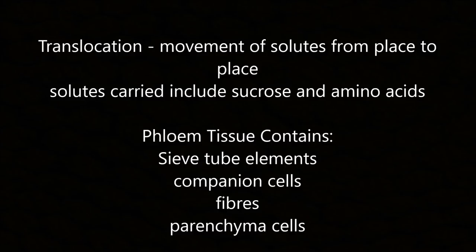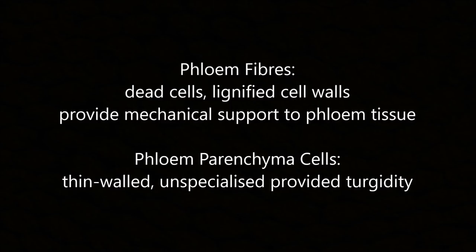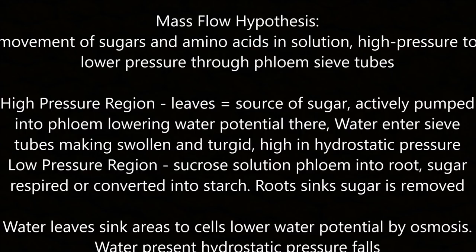Translocation is the movement of solutes from place to place; solutes carried include sucrose and amino acids. The phloem tissue contains sieve tube elements, companion cells, fibres and parenchyma cells. Sieve tube elements are elongated with pores and cross walls at each end, with a longitudinal flow of material; pores and callose make up the sieve plate. Companion cells have many plasmodesmata allowing communication with phloem sieve tube cells. Phloem fibres are dead cells with lignified cell walls providing mechanical support. Phloem parenchyma cells have thin walls and are unspecialised.